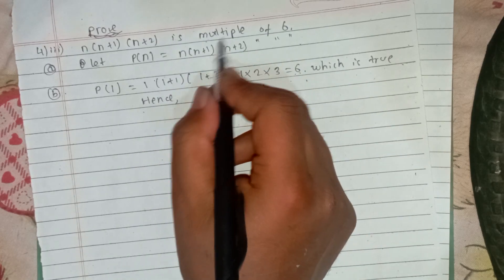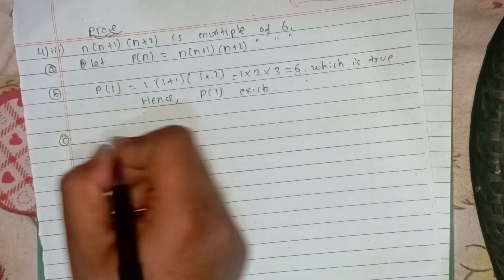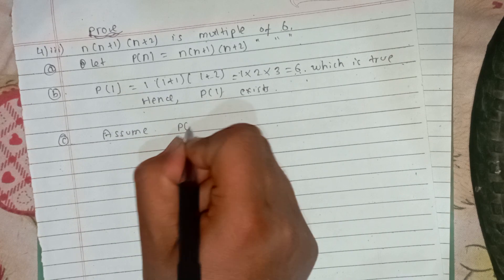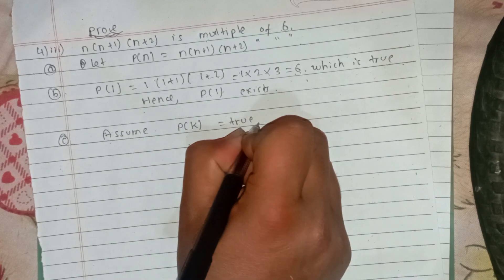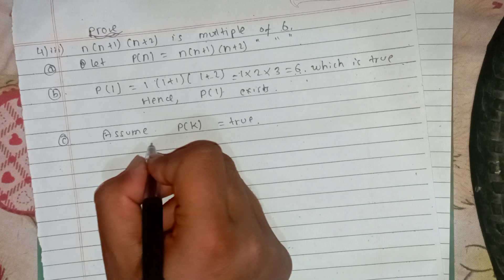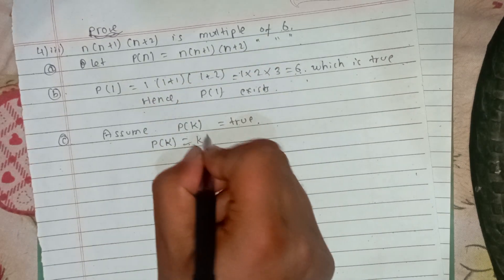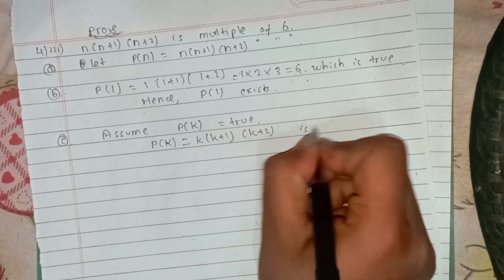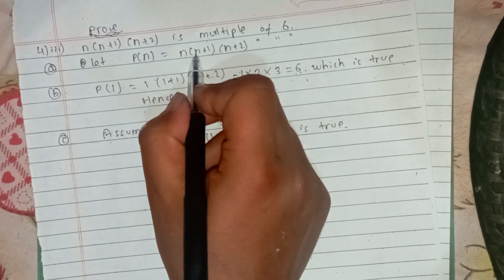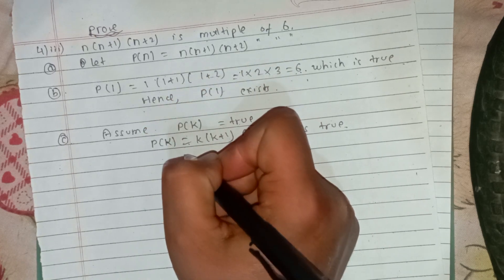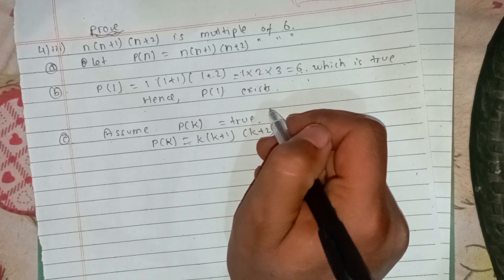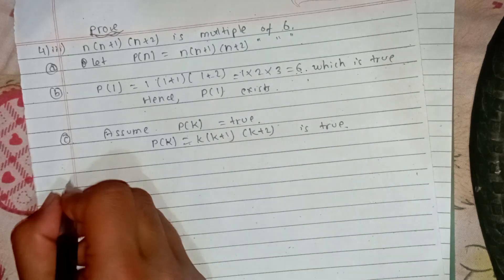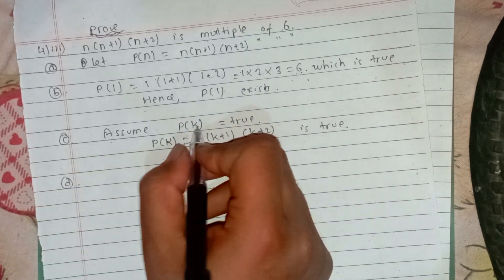Let P(k) be true. That means k into k plus 1 into k plus 2 is a multiple of 6 is assumed to be true. We assume that P(k) holds, and we have to prove that P(k+1) is also true.